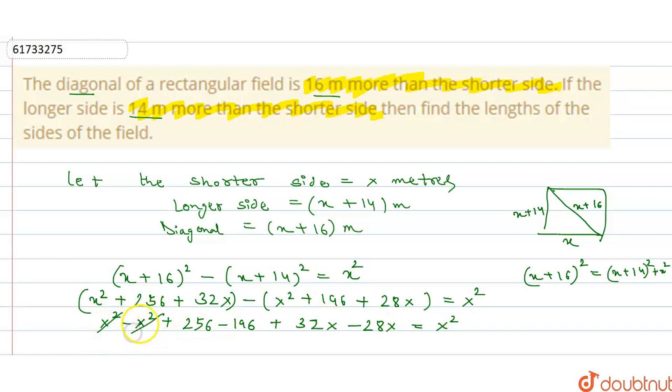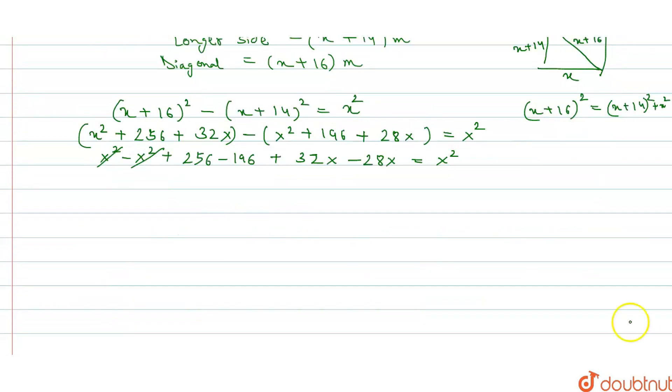x square minus x square plus 256 minus 196 plus 32x minus 28x equals to x square. So plus minus minus these two cancel out, 256 minus 196 equals to 60, and sign is greater so here we can put 4x equals to x square. So here we get negative x square minus 4x minus 60 equals to 0. So this is the required quadratic equation.